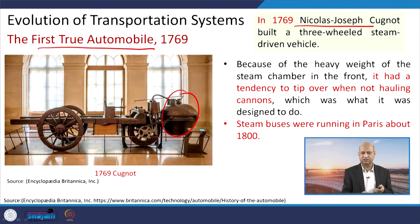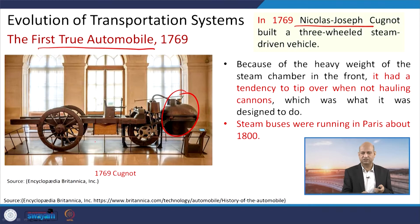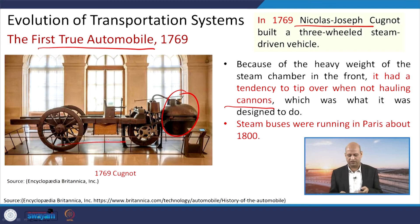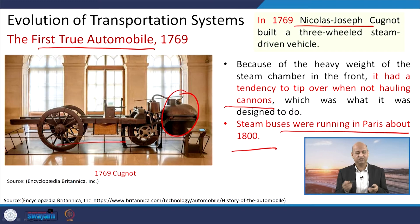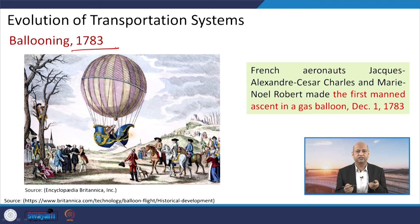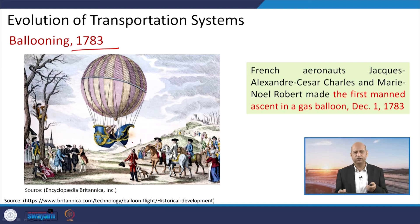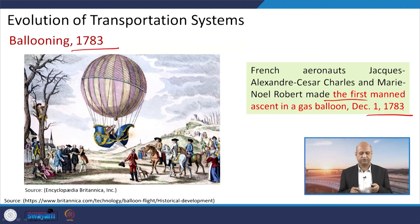The first steam-based automobile was a three-wheeled structure — the large part was for steam generation and it was used for transporting cannons, though it could tip over without the cannon, so the design was not very comfortable. Steam buses were running in Paris in 1800. In 1783, balloons were invented for taking people from one place to another. Though not very popular, even today balloons are used for meteorological observations. This was a big invention — the first experiment where a balloon was used for flying from one place to another.